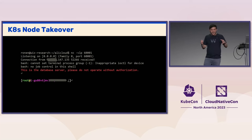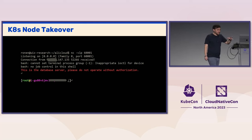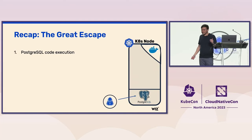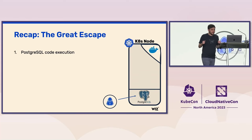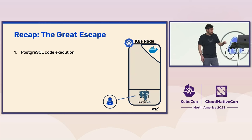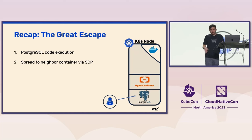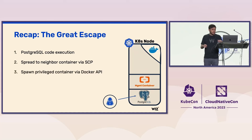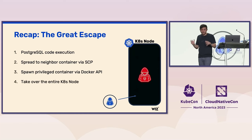To recap how we escaped the Kubernetes node: we started by executing code on our own PostgreSQL instance. From there, we spread to the neighbor Alibaba management container through the SCP trick. From there, we accessed the Docker API, created a new privileged container, and once in a privileged container we had access to run code over the entire Kubernetes node.